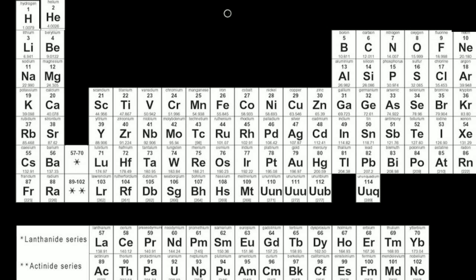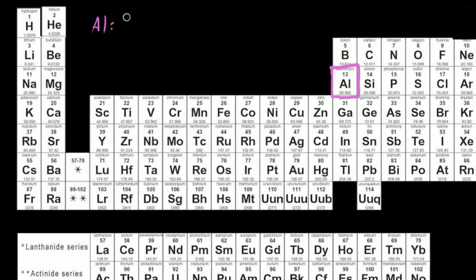I'll go over this by example. Let's say we were figuring out the electron configuration for aluminum. We could write it all out: starting with our S block, we have 1s2, 2s2, then we fill up our p orbitals — 2p6 — then fill up our 3s orbital, so 3s2. At this point we're at the configuration for magnesium, and we just need one more electron in our 3p orbitals, so our last entry is 3p1.